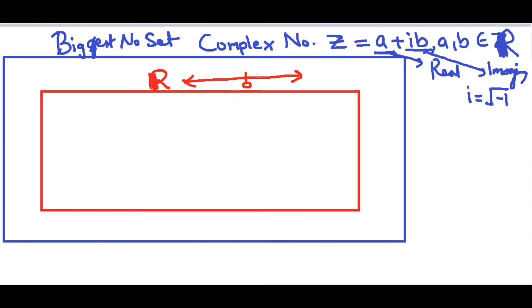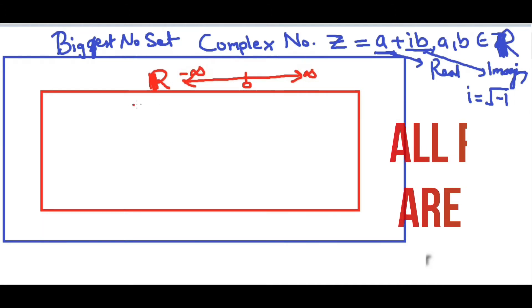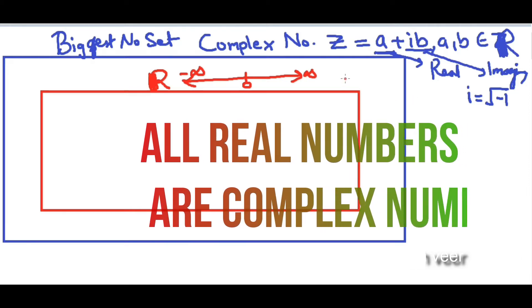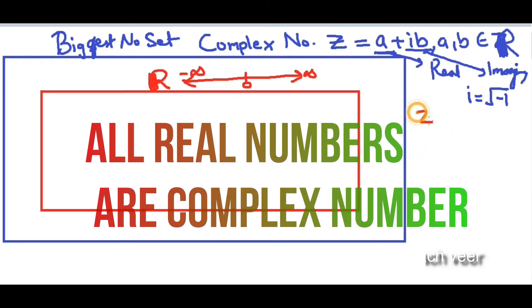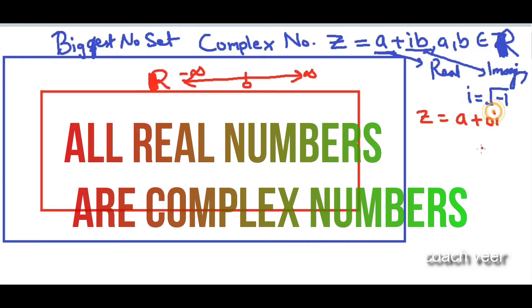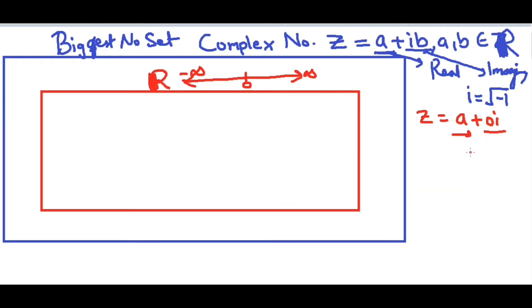All numbers from minus infinity to infinity are real numbers, and this whole real number set is contained within the complex numbers. If somebody has a doubt, you can write a real number z = a + 0i, meaning the imaginary part is 0 and a is the real number. So real numbers are contained in complex numbers. If something extra comes as a multiple of i other than 0, it becomes a complex number, not a real number.